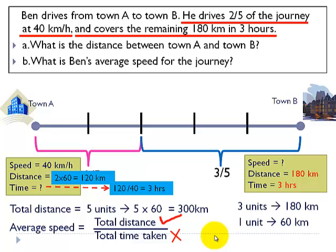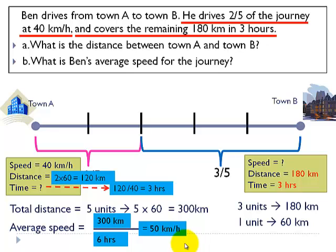Now we know the total time taken: three hours plus three hours is six hours in total. We replace the distance with 300 km and the total time taken with six hours. When we divide 300 by 6, we get 50. So the average speed for the journey is 50 km per hour.